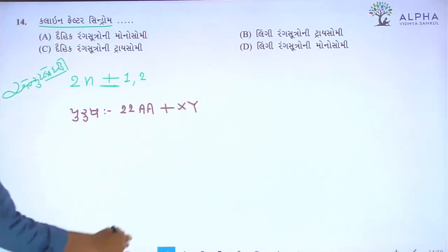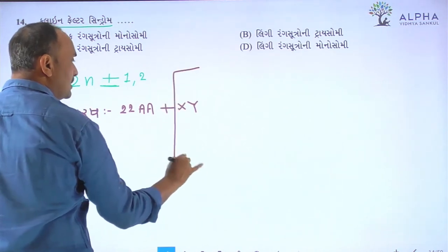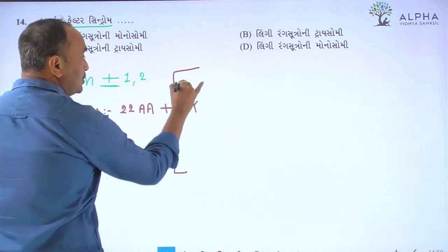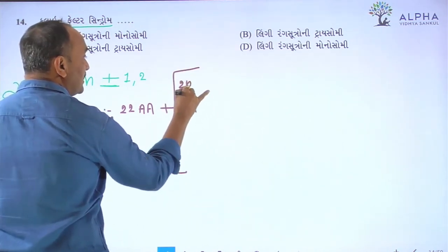When we look at the 23rd pair, the sex chromosomes, 2N equals XY.